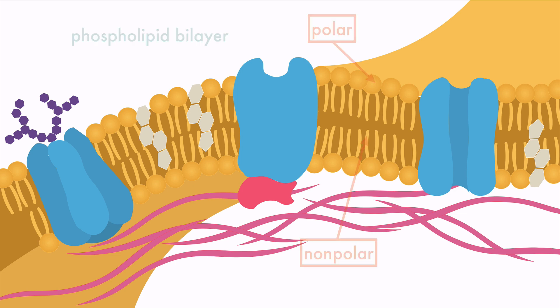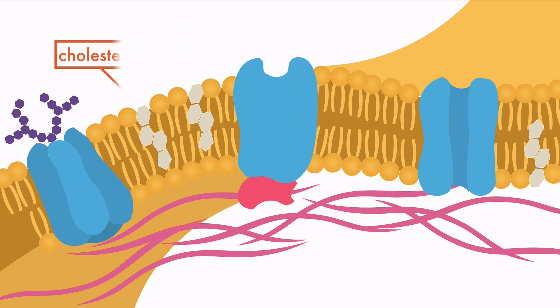Another lipid, cholesterol, is a key part of the cell membrane, keeping it together while still allowing the proteins to move around.